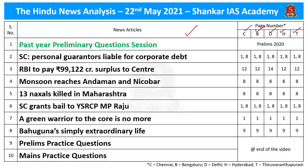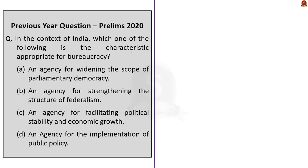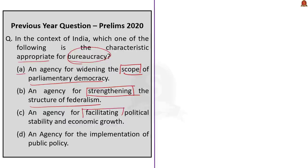Before discussing the articles, let us see a few important preliminary questions asked in the year 2020. Moving to the first question: in the context of India, which one of the following is the characteristic appropriate for bureaucracy? Option A: an agency for widening the scope of parliamentary democracy. Option B: an agency for strengthening the structure of federalism. Option C: an agency for facilitating political stability and economic growth. Option D: an agency for the implementation of public policy.